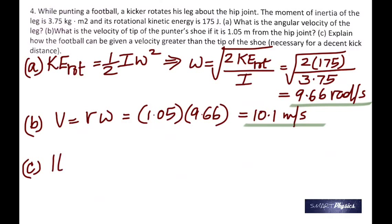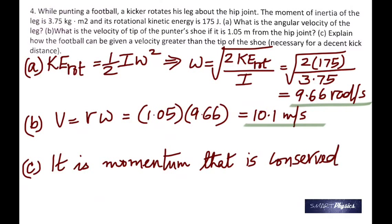And C says, explain how the football can be given a velocity greater than the tip of the shoe. That's obviously because the mass of the leg is much greater than the mass of the football, and it is momentum that is conserved. It's not velocity that is conserved, it is momentum.